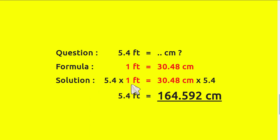Then you multiply this number by 5.4 and this number by 5.4 as well, just like what we have here. Put 5.4 here and put 5.4 here. 5.4 times 1 equals 5.4, just like we have from the question. Then 30.48 centimeters times 5.4 equals 164.592 centimeters.